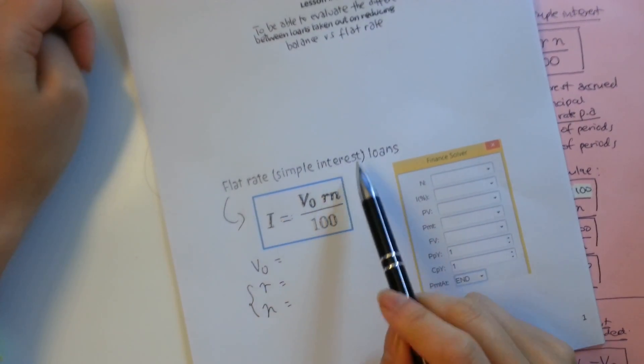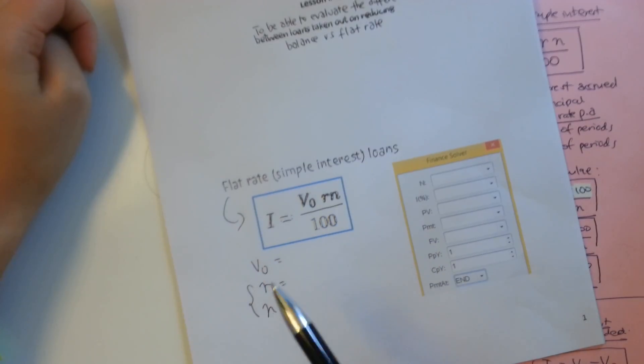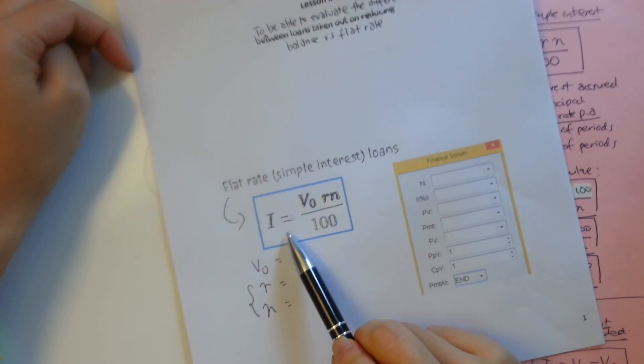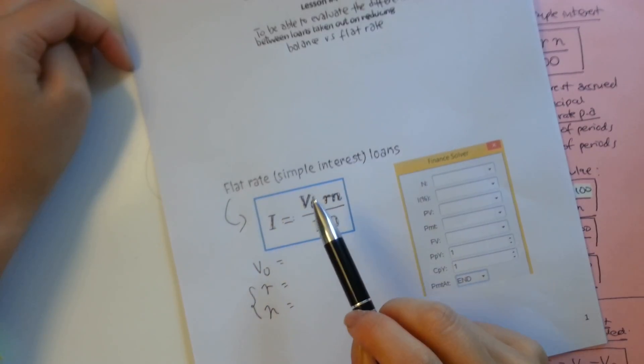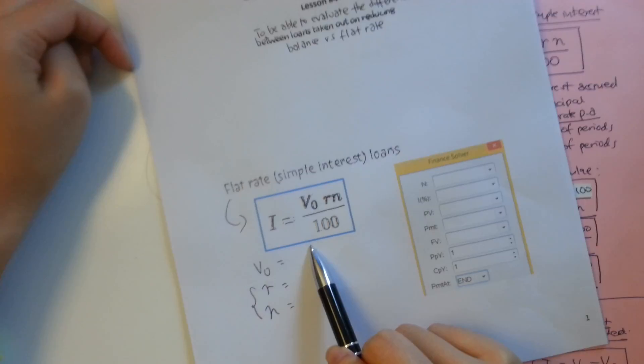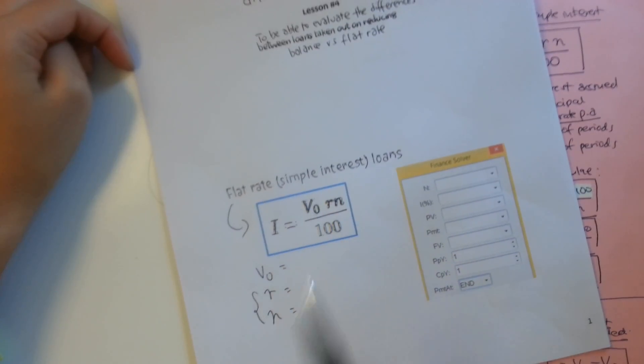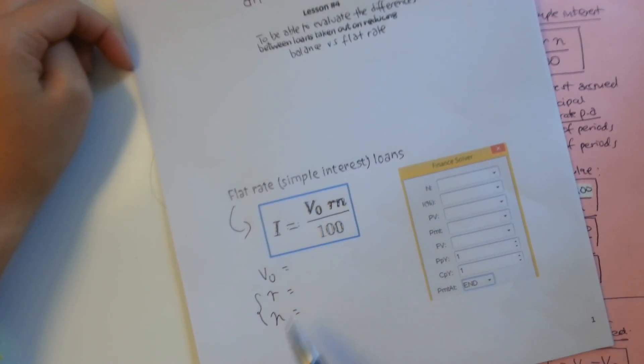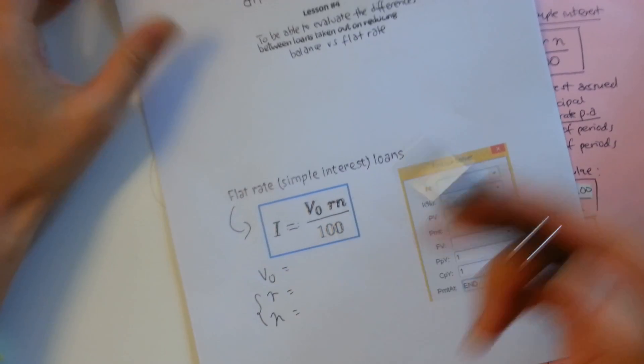Now if you're doing flat rate or simple interest loans, the amount of interest is equivalent to the simple interest formula. You use the same formula as you had for simple interest to calculate flat rate or simple interest loans. Just to remind you that the V0 is your principal, your R is your rate per period, and the N is the number of periods. So it's very similar to the I equals PRT over 100 formula, which is using different notations.